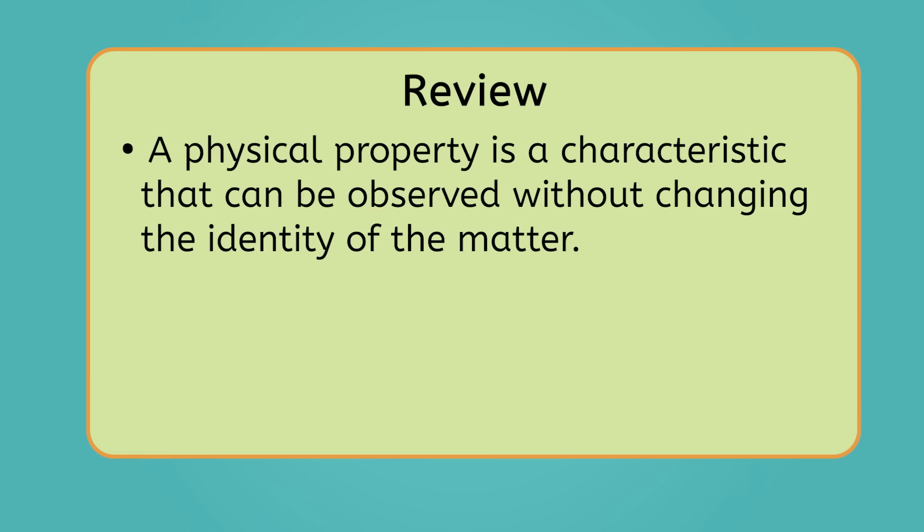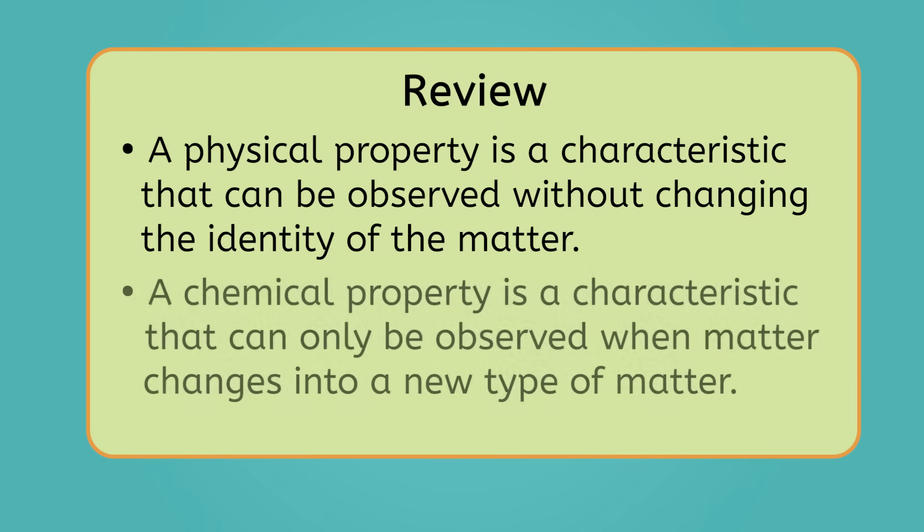Let's review what we've learned about the properties of matter. A physical property is a characteristic that can be observed without changing the identity of the matter. This includes properties like melting and boiling points, solubility, magnetism, and a whole lot more. A chemical property is a characteristic that can only be observed when matter changes into a new type of matter. These properties all come from chemical reactions like rusting and flammability.